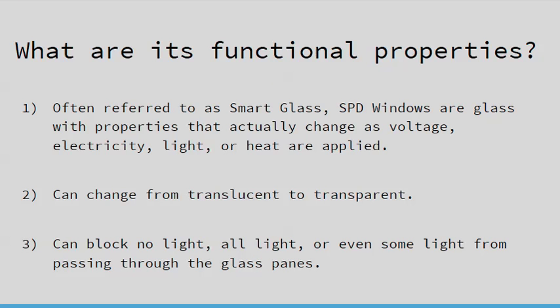What are the functional properties of suspended particle device windows? They're often referred to as smart glass — windows whose properties actually change as different amounts of voltage, electricity, light, or heat are applied to them. This means they can change from translucent to transparent, ranging from blocking no light to all light, or somewhere in the middle.